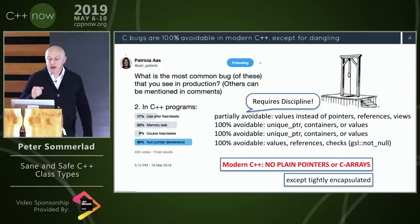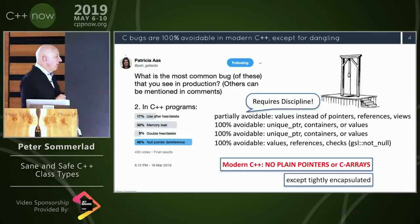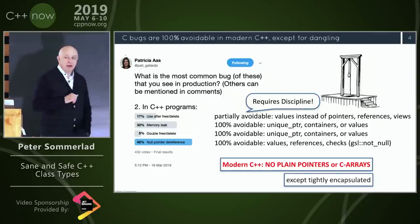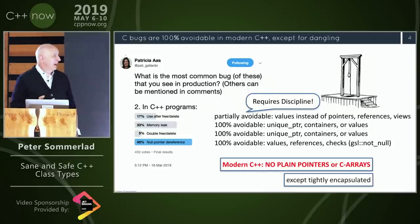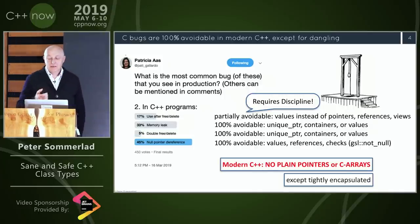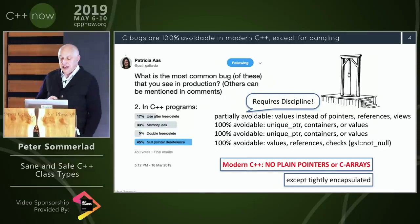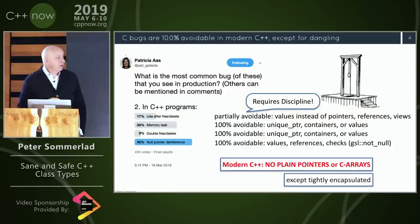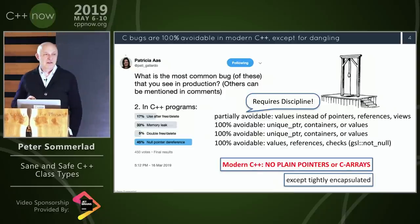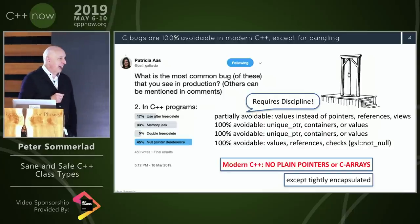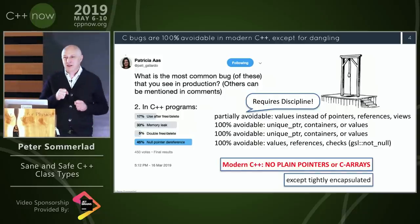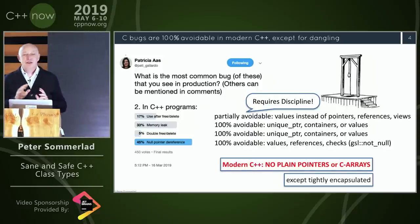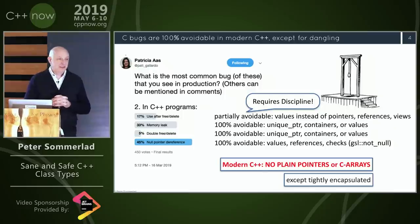Memory leaks: today's C++ code should never have one. We have unique pointers, containers, and values — they just work. Double free/delete: again, unique pointer, containers, values. Null pointer dereference: 100% avoidable, because we have values, pass by value, references that cannot be null, and we can employ automatic checks like the Core Guideline Support Library (GSL). What we shouldn't use are plain pointers and C-style arrays — or if you must, hide them behind a proper abstraction.